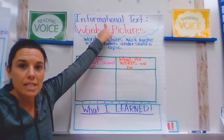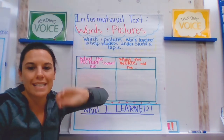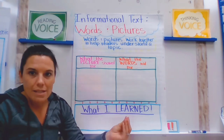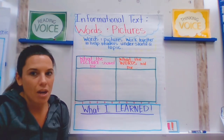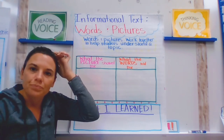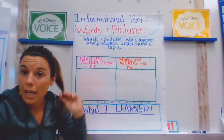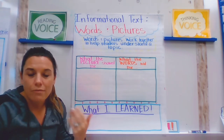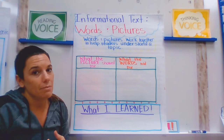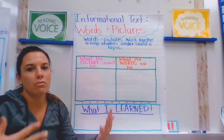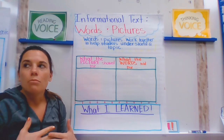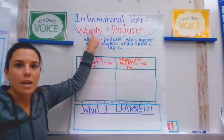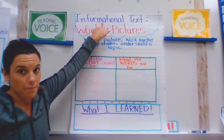Remember, an informational text is a text that we read to get information. The author writes informational text to give us facts about things. It is not made up — it's real, it's true, there are facts. These are important texts for us to read and understand because as we become better readers, we're going to start reading to get information and to learn things. That's why informational text is so important.